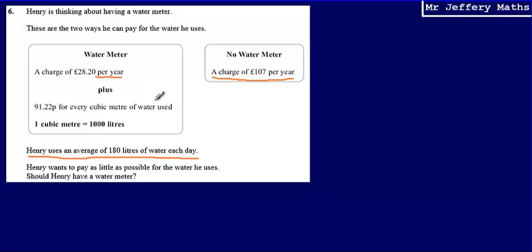So as each of these water meters are charged on a per year basis, the first thing we're going to need to do is work out how much water Henry uses in a year. So if he uses 180 liters each day, then the amount that he'll use in one year is going to be 180 multiplied by 365.